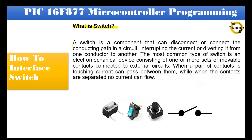What is a switch? A switch is a component that can disconnect or connect the conducting path in a circuit, interrupting the current or diverting it from one conductor to another. The most common type of switch is an electromechanical device consisting of one or more sets of movable contacts connected to external circuits. When a pair of contacts is touching, current can pass between them, while when the contacts are separated, no current can flow.